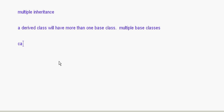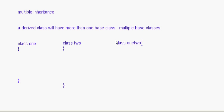Here I can have 'class one' and 'class two' as base classes, and then I write 'class one_two : public one, public two'. This is the derived class inheriting from both class one and class two, with the visibility mode set to public in both cases.